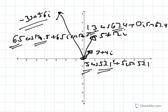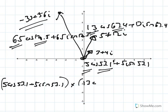Well, that's not an accident, and it's called the multiplication rule. If you have two numbers that are in polar form already, like 5 cosine 53.1 plus 5i sine 53.1, and I wanted to multiply it by 13 cosine 67.4 plus 13i sine 67.4, if they're in this form, the answer is also going to be in this form.